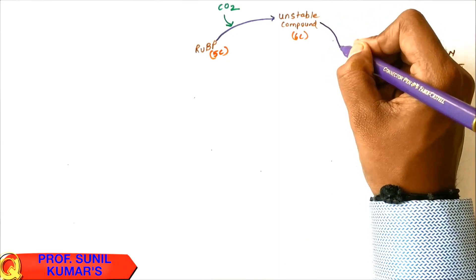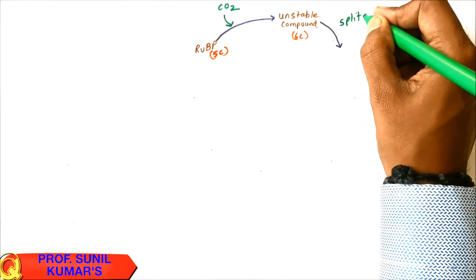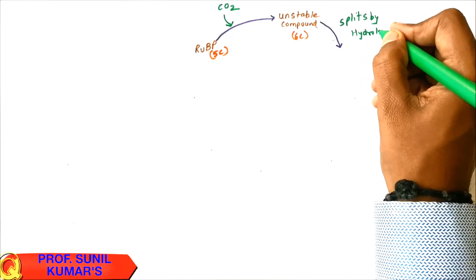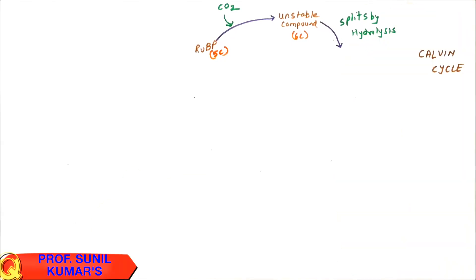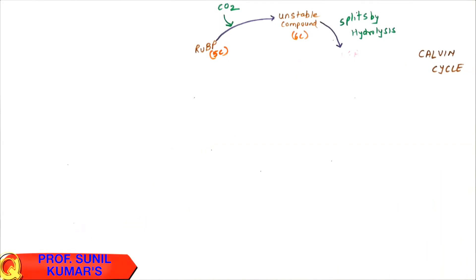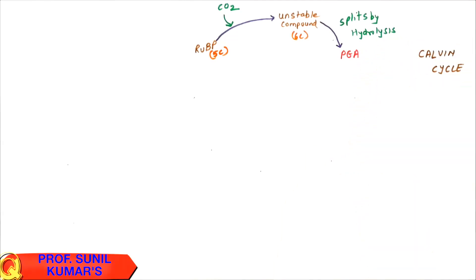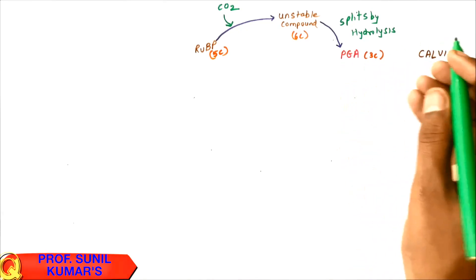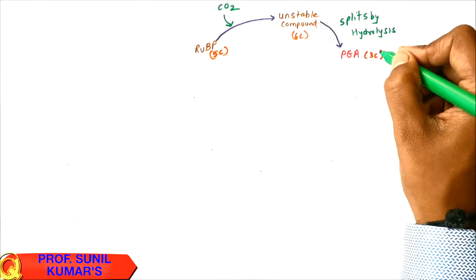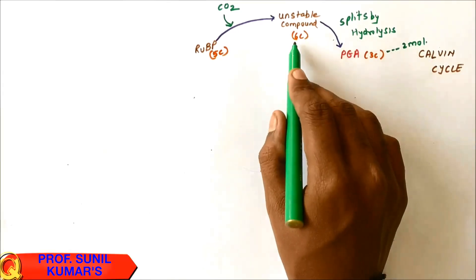Since the six-carbon compound is unstable, it splits by hydrolysis into PGA — phosphoglyceric acid — which is a three-carbon compound and the first stable compound of the cycle. This is why the Calvin Cycle is also called the C3 cycle.